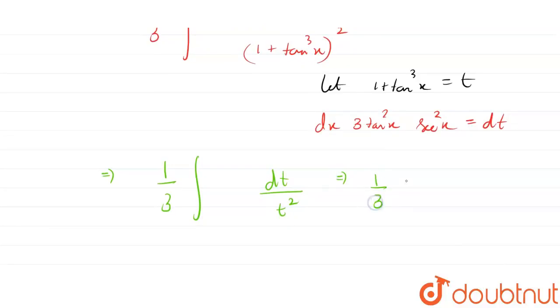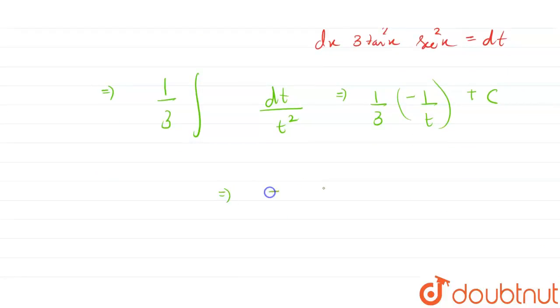This is equal to 1/3 into minus 1/t plus C. So this is minus 1 divided by 3t, and t is what...